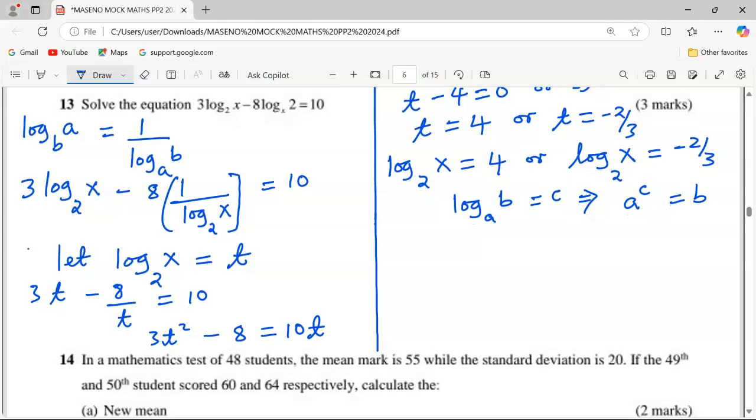And if this is so, then it means 2⁴ can give us x, or 2^(-2/3) can also give us x.